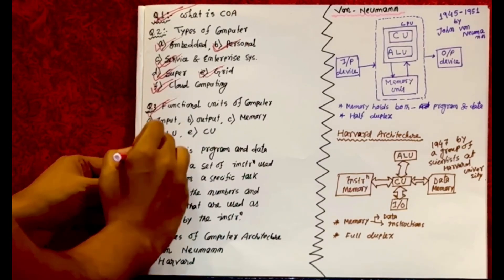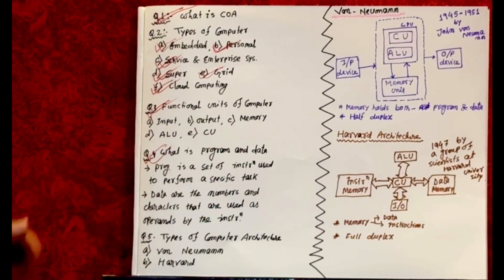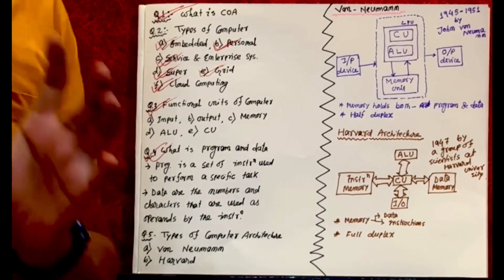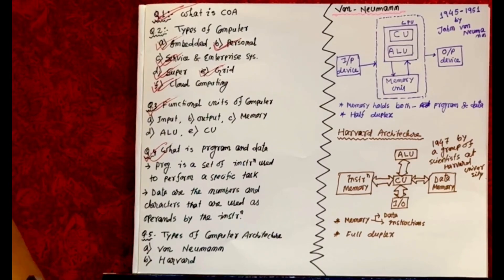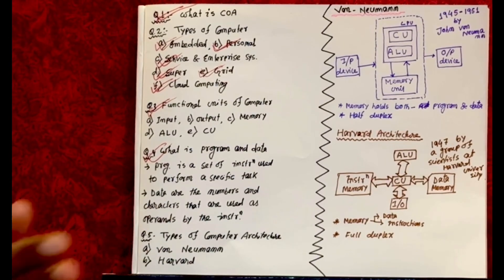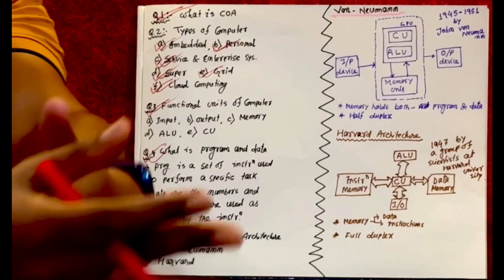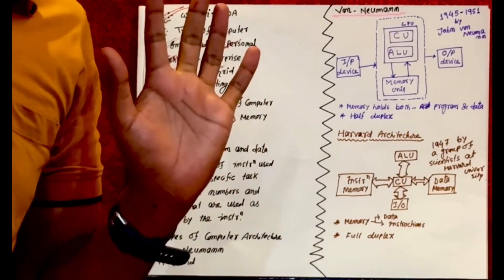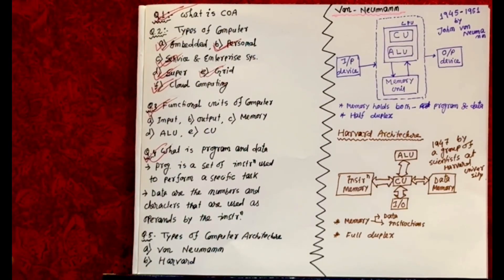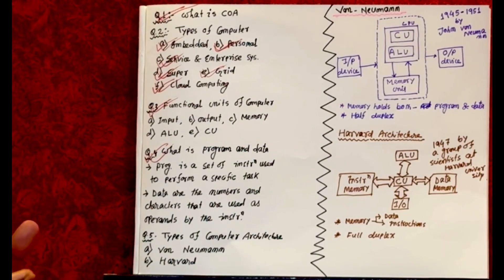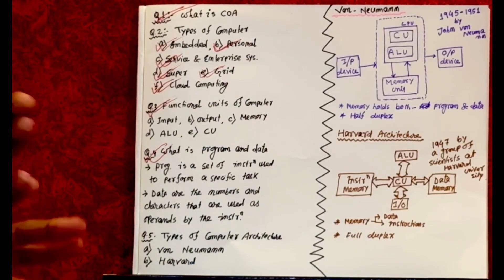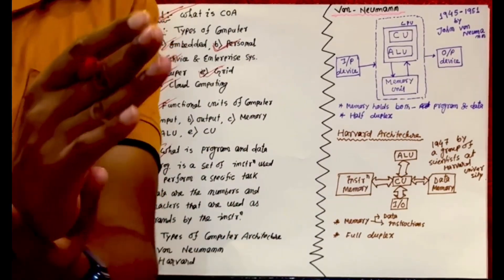Next: what is a program and what is data? A program is a set of instructions dedicated to performing some specific task. What is an instruction, what tasks you can do — all these we will see in future classes. Data can be defined as the numbers and characters used as operands by the instructions. What an instruction is in detail, we will cover in upcoming classes.